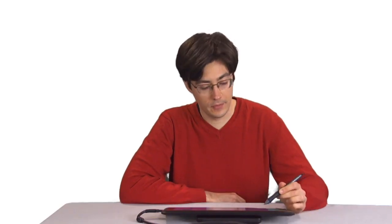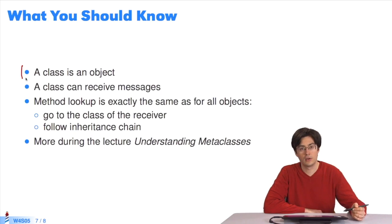Here's what to remember. A class is an object like any other. Messages can be sent to objects and therefore to classes. The lookup mechanism is exactly the same in both cases. It starts searching in the class of the receiver, and then searches each superclass in the inheritance chain until it finds a matching method.